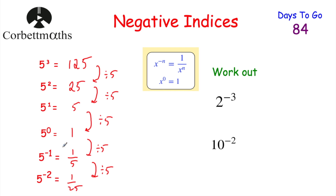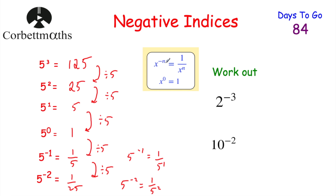To find 5 to the power of negative 1, divide by 5 again: 1 ÷ 5 = 0.2 or 1/5. Dividing by 5 once more gives 5 to the power of negative 2: that's 1/25 or 0.04. So there's a clear pattern — x to the power of negative n equals 1 over x to the power of n. If you have a negative power, write 1 over and change the power to positive.